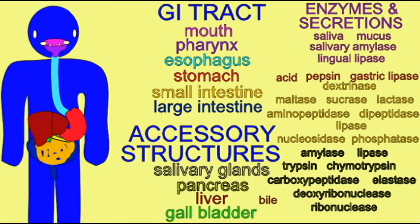The liver produces bile, which helps to emulsify fat. So there are a long list of enzymes and secretions produced by the various regions of the digestive system.